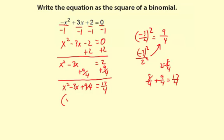So it's going to be x minus 3 halves quantity squared equals 17 fourths. And I got this 3 halves, this negative 3 halves, by dividing this negative 3 by 2.